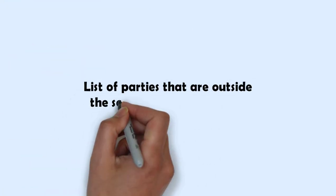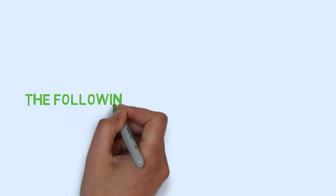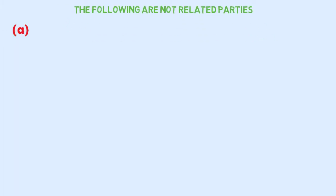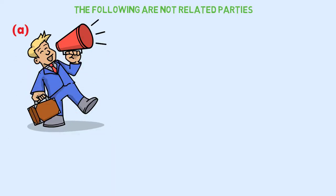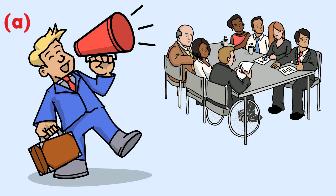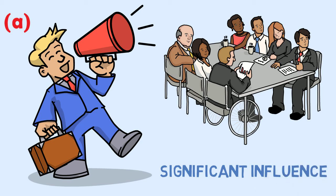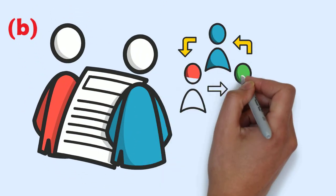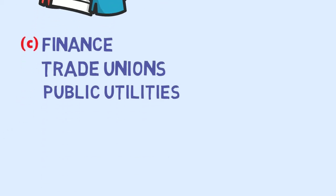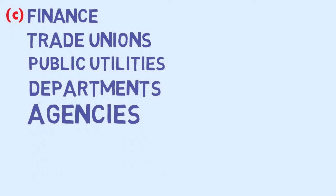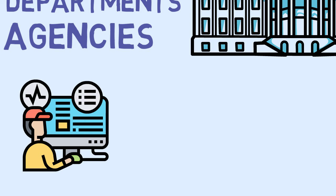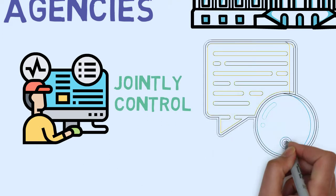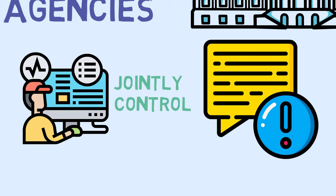The following are not related parties. A: Two entities simply because they have a director or other member of key management personnel in common, or because a member of key management personnel of one entity has significant influence over the other entity. B: Two joint venturers simply because they share joint control of a joint venture. C: Providers of finance, trade unions, public utilities and departments and agencies of a government that does not control, jointly control, or significantly influence the reporting entity, simply by virtue of their normal dealings with an entity.